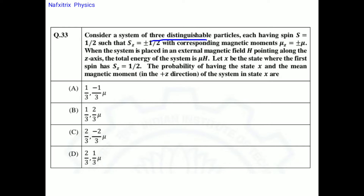Distinguishable means we can clearly see the difference between the particles — each is a separate, distinct one. There is no confusion between particles: this is the first particle, this is the second particle, and so on. Each particle has spin s = 1/2, such that sz = ±1/2.